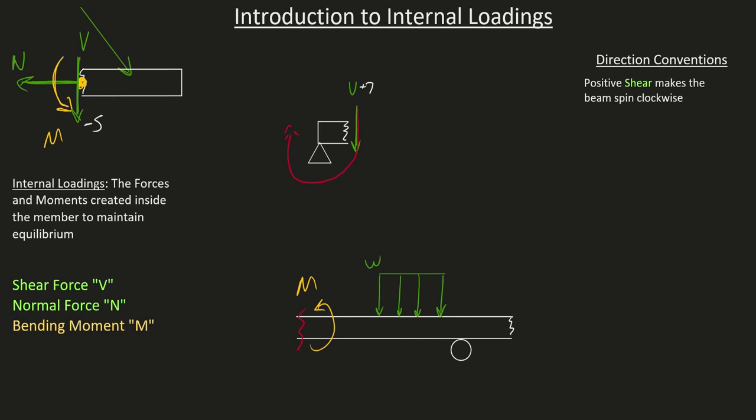Because check it out, this force wants to spin this FBD in the clockwise direction. So, a bit of weirdness there because over here, our shear was downwards and it was negative, but over here, the shear was downwards, but it was positive. So, stick to this statement here.